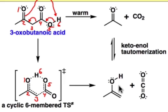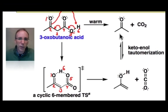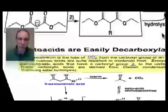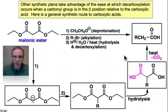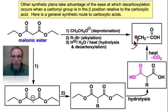Keto-enol tautomerization of this enol produces the carbonyl derivative. Let's see how this chemistry can be put to use in synthesis. We'll begin with the synthesis of carboxylic acids.